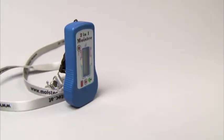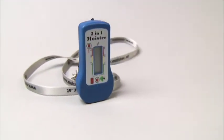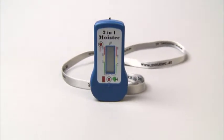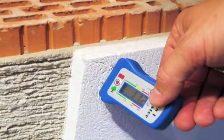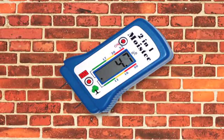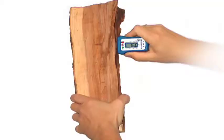The Moistek 2-in-1 Moisture Meter from Merlin is one of the world's smallest moisture meters. This handy moisture meter gives you the moisture content of building materials and all types of wood.